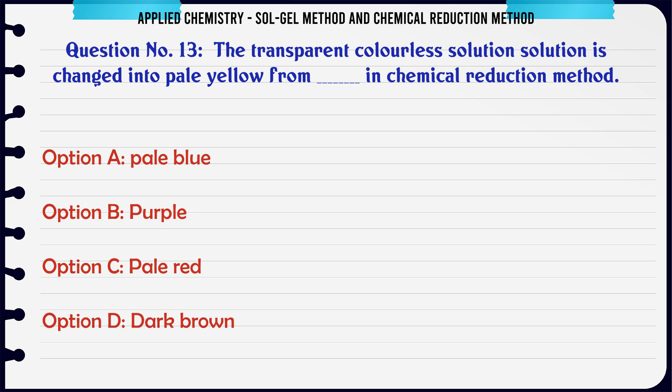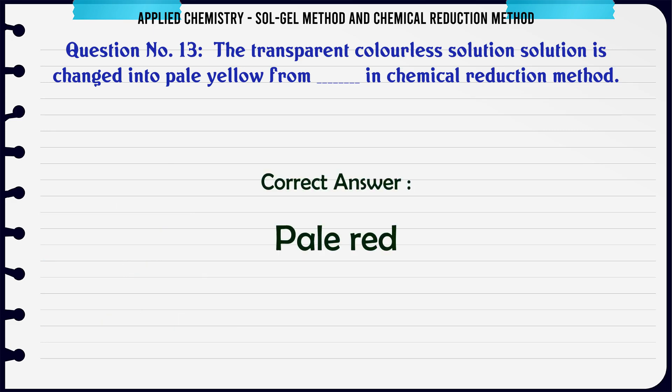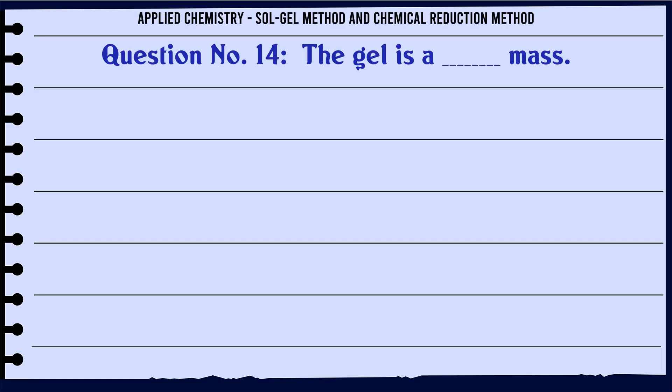The transparent colorless solution is changed into which color in the chemical reduction method? A. Pale blue, B. Purple, C. Pale red, D. Dark brown. The correct answer is Pale red.